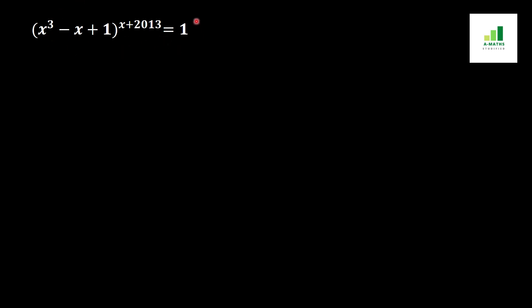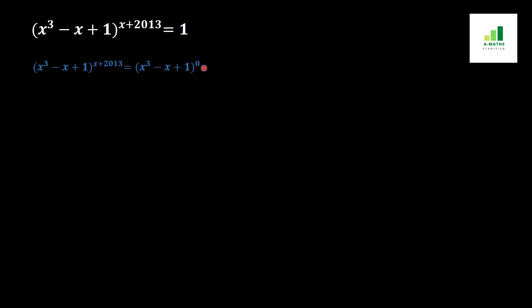In order to solve this equation, first we convert the value 1 into (x³ - x + 1)^0. This is because from the basic rule of algebra, if any value or variable has a power of 0, it will be equal to 1. So we rewrite 1 as (x³ - x + 1)^0.